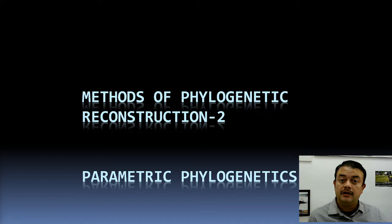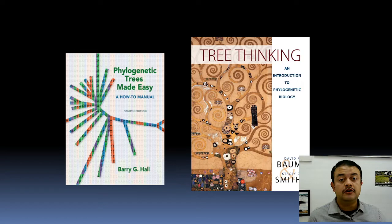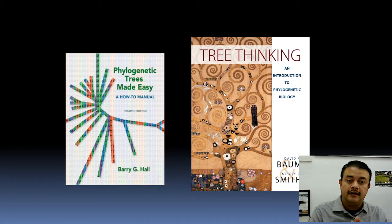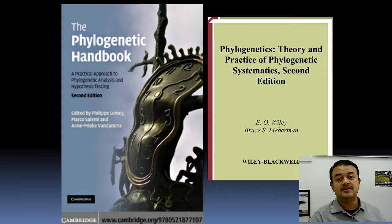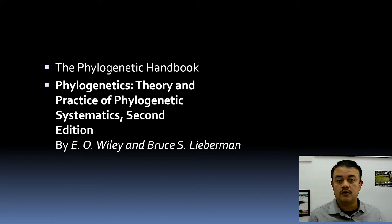We have already seen non-parametric phylogeny in an earlier class — that is called maximum parsimony. Now we will see parametric methods, which are distribution-dependent. Two of my favorite books for phylogeny are Barry G. Hall's 'Phylogenetic Trees Made Easy,' and Baum and Smith's 'Tree Thinking.' More advanced books include 'The Phylogenetic Handbook' from Cambridge University Press and William Lieberman's 'Phylogenetics: The Theory and Practice of Phylogenetic Systematics.'